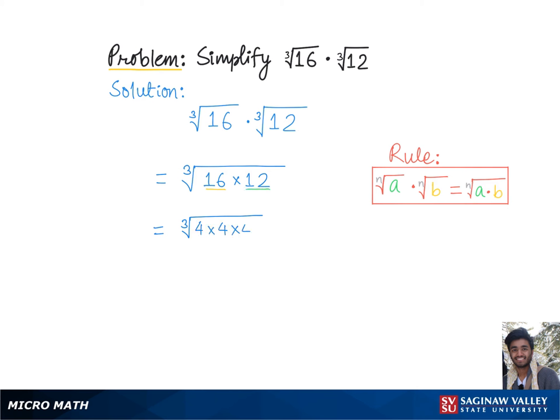This equals cube root of 4 times 4 times 4, which is 4 cubed, times 3. Now this 4 cubed can be pulled out of the cube root as simply 4, and we are left with cube root of 3. Thus, 4 times cube root of 3 is the final answer.